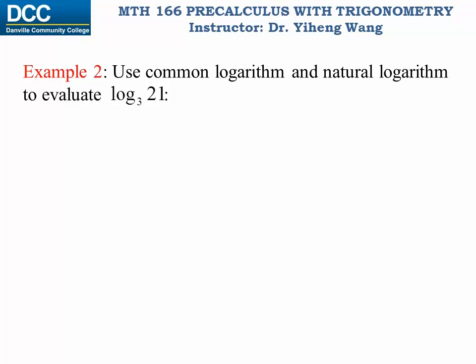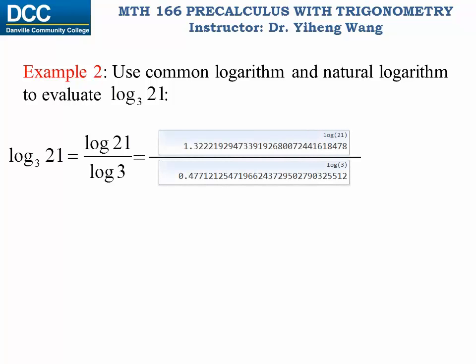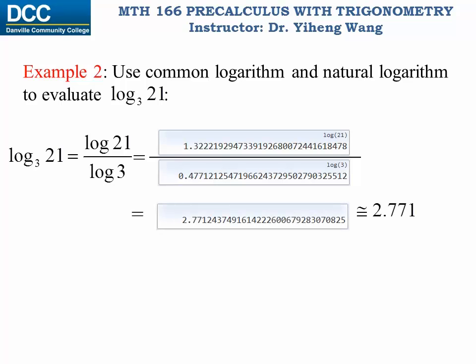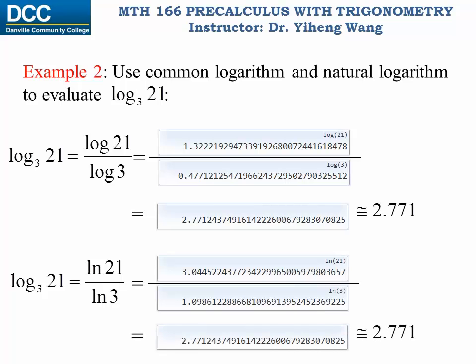Recall that in the beginning I asked how we evaluate log base 3 of 21. Since we have learned the change of base formula, we can now use either common logarithm or natural logarithm. Using common logarithm first: log base 3 of 21 equals to the quotient log 21 over log 3, which gives approximately 2.7771. Or using the natural base constant e, this becomes ln 21 over ln 3, and again using our calculator we get exactly the same answer, approximately 2.771. This makes sense because 3 squared is 9 and 3 cubed is 27, so we expect the answer to be somewhere between 2 and 3, and 2.771 is a very reasonable answer.